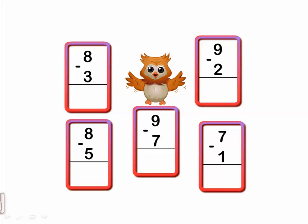Nine minus two. Which one is the smaller? The smaller number is two. We will count after two till nine. Count with me, children: three, four, five, six, seven, eight, nine. How many are left? Seven. So nine minus two equals seven.